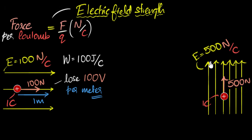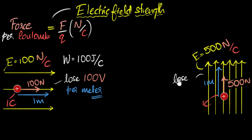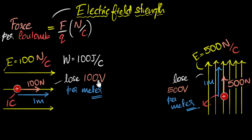Similarly, what can you say about the 500 N/C field? How many volts would we lose if you go one meter forward? The calculation is very similar: if I go one meter forward, the work done by the electric field would be 500 joules — so 500 joules per coulomb, meaning 500 volts for every meter you go forward. So in this electric field we lose 500 volts per meter. This is our new way, our new definition of electric field strength — this number tells us how much potential gets dropped for every meter you go forward along the field.